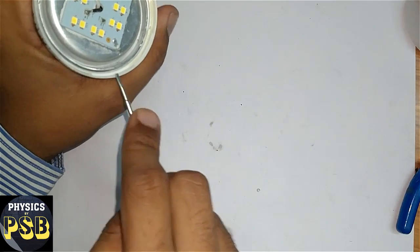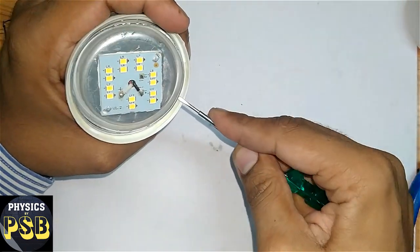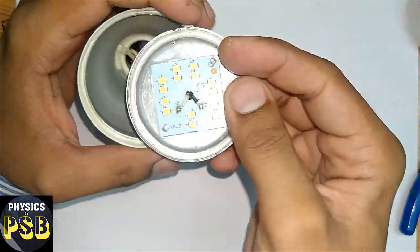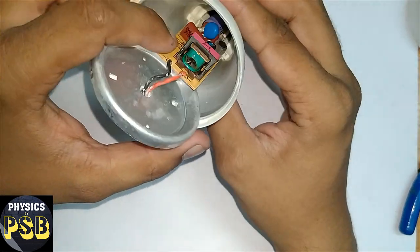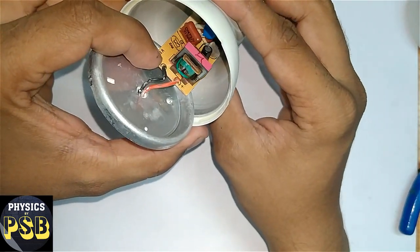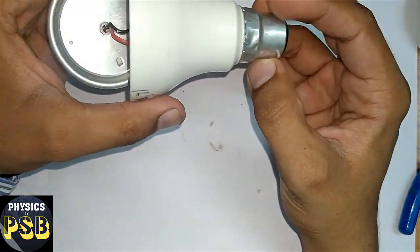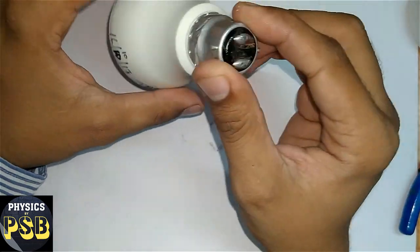See, it has got loose. Just continue doing the same. Now as you can see, it has come off. Now you can see the driving circuit of this LED. Well, now I will remove this circuit from this side.